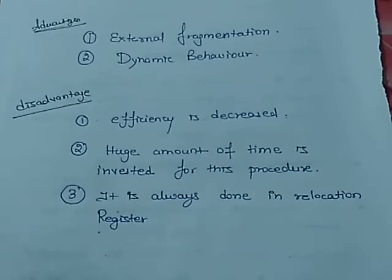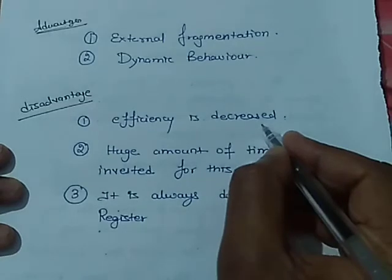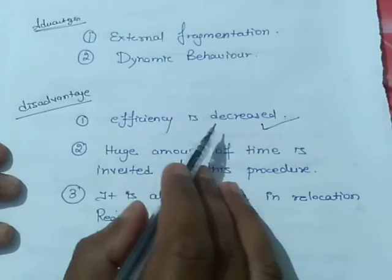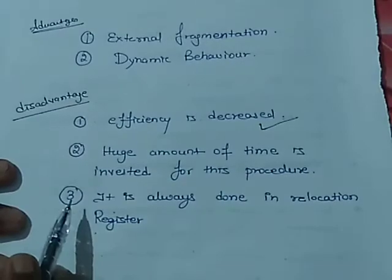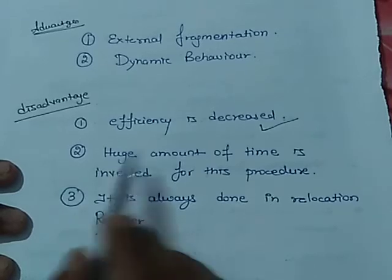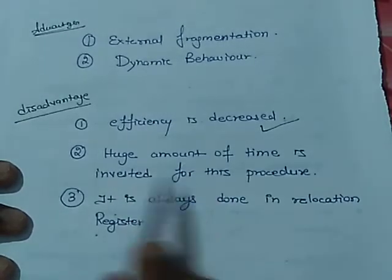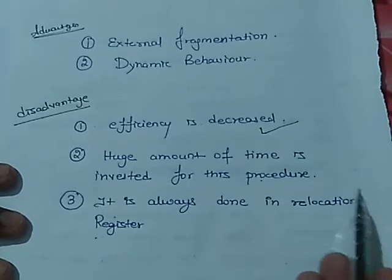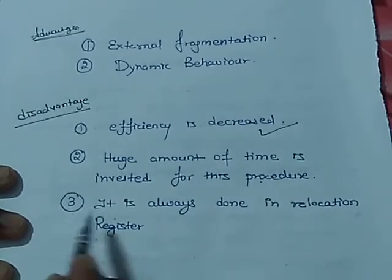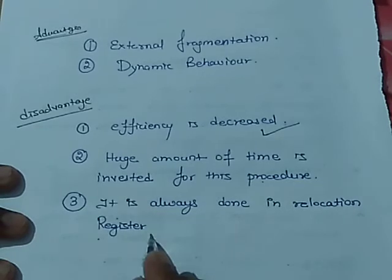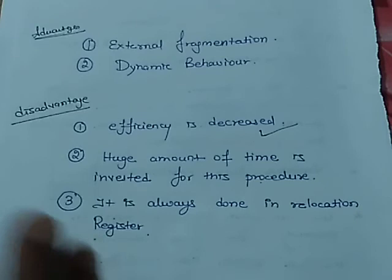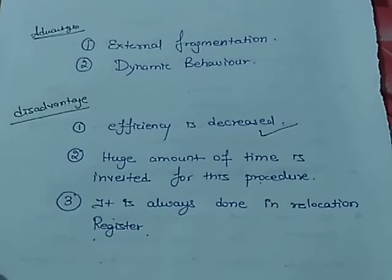Now the disadvantages are: the efficiency of the system is decreased in case of compaction due to the fact that all free spaces have to be accumulated to a single place. Point number two: a huge amount of time is invested for this process because all the free memory blocks are transferred to a single place of memory. Third: it is always done in relocation register, it means it is always done in a dynamic environment at execution time. Thank you very much.